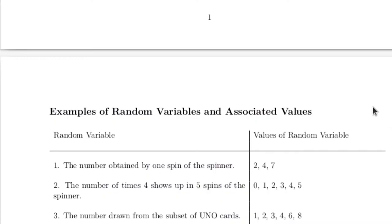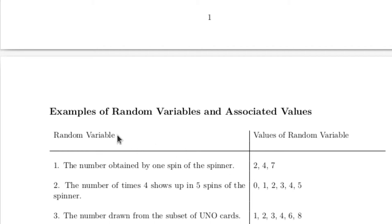This information is summarized in a handout associated with this video. If the random variable is the number obtained by one spin of the spinner, then the values of the random variable are two, four, and seven. Make a distinction between what the random variable is and what the values of the random variable are.